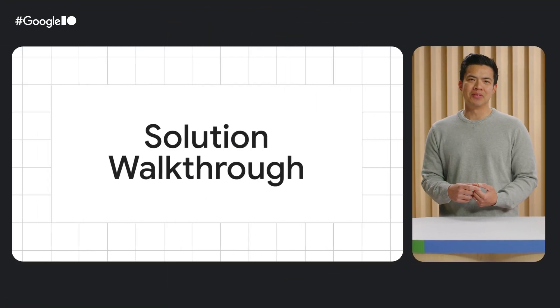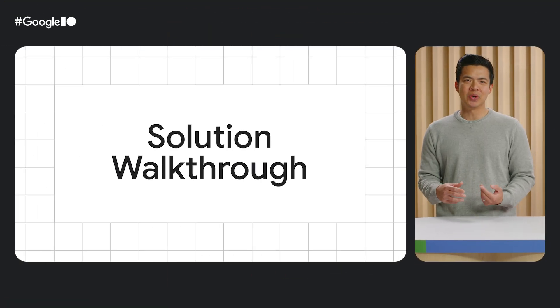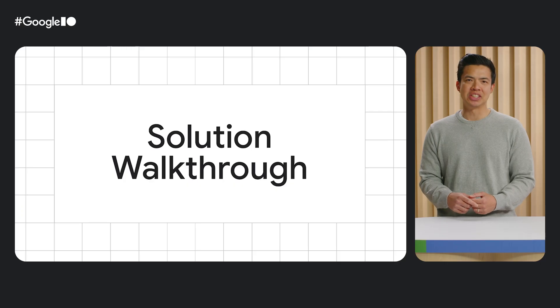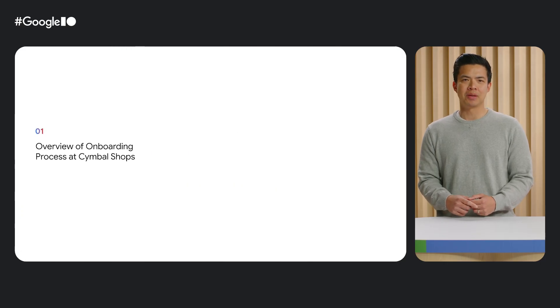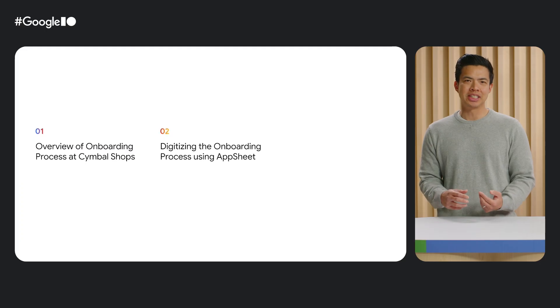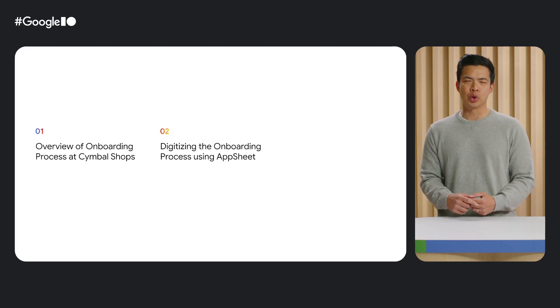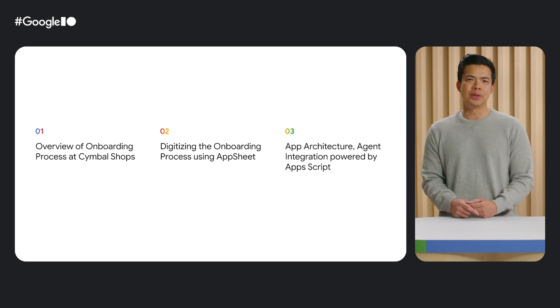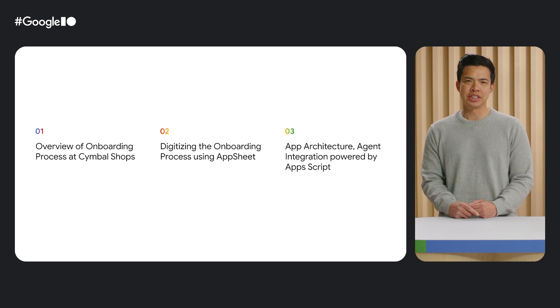Let's walk through a demo of AppSheet in action. In today's demo, we'll showcase an AppSheet app integrated with an AI agent using Apps Script. We'll begin by exploring Symbol Shop's onboarding process and demonstrate how AppSheet digitizes this process, transforming it into a seamless workflow. Finally, we'll provide an overview of the app's architecture, highlighting the key components that drive its functionality.